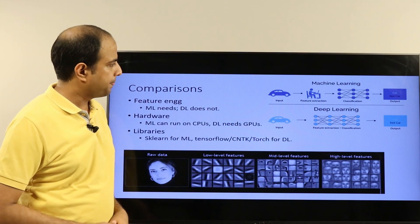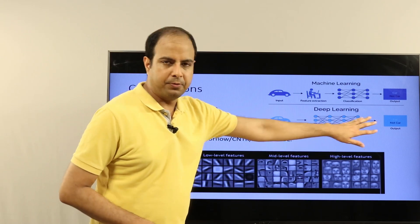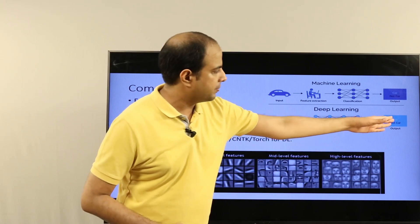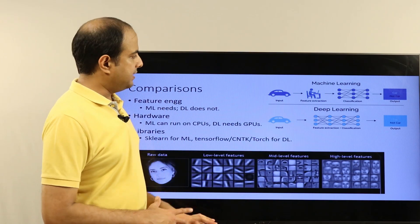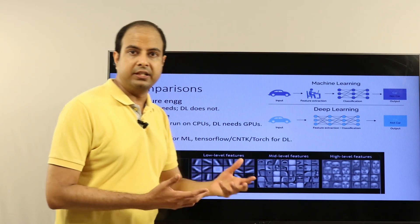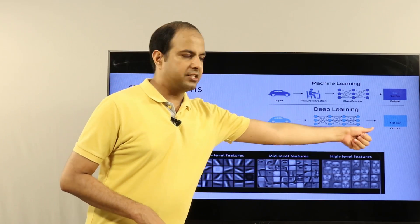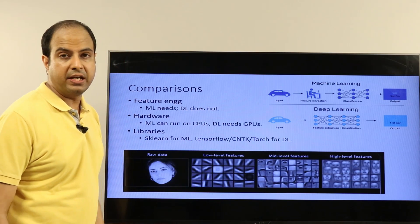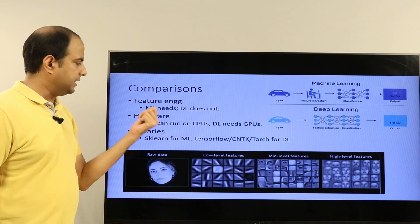On the other hand, a deep learning model also does the same input and output—it takes a picture and comes up with the same output—but doesn't require any feature engineering. In deep learning, the engineer can actually take the image and give it directly as input to a neural network, to a deep learning model, which can classify whether it's a car or not. So feature engineering is not required in deep learning; machine learning does need feature engineering.